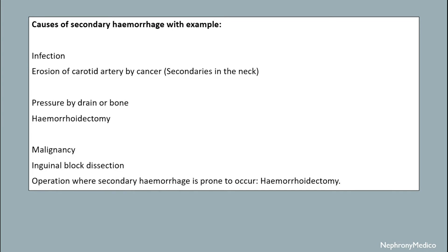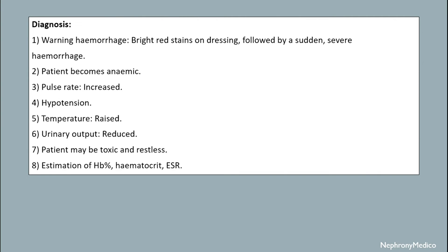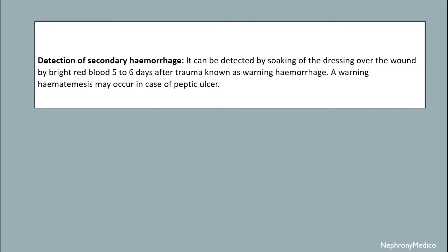Diagnosis: initially there is a minor hemorrhage with bright red extension of the dressing, followed by a sudden severe hemorrhage. The patient becomes anemic, pulse rate is increased, hypotension occurs, temperature is raised, urine output is reduced, and the patient is toxic and restless. Investigations include estimation of hemoglobin percentage, hematocrit, and ESR.